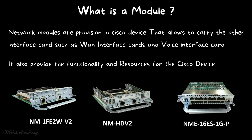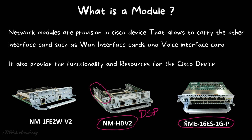Two additional network modules are worth noting. The first is the NM-HDV2, which provides DSP — Digital Signal Processing — to convert voice into small electronic packets. This module has its own memory and processor. The second is a 16-port Ethernet module that, when installed in a router, provides switch functionality with 16 Power over Ethernet ports, which can be used to power devices like cameras and access points.